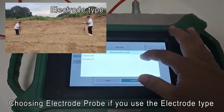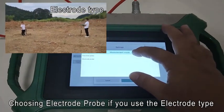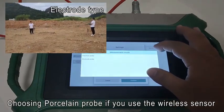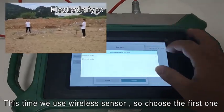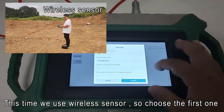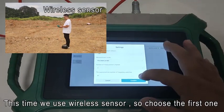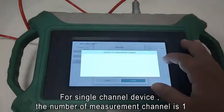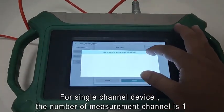Then choose the measurement method. Choose electrode probe if you use the electrode type, choose a proscenium probe if you use the wireless sensor. This time we use wireless sensor so choose the first one. For single channel device, the number of measurement channels is one.